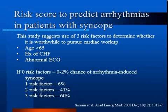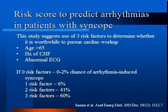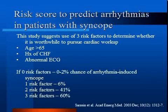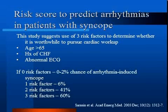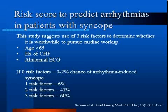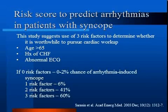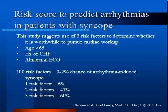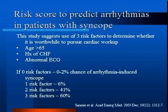Often a reason for syncope cannot be identified after an initial workup and patients are admitted for a cardiac workup. The Saracen et al. study has been validated and suggests using three risk factors to determine whether it is worthwhile to pursue cardiac workup: age greater than 65, history of CHF, and an abnormal ECG. If they have zero risk factors, there is a 0-2% chance of arrhythmia-induced syncope. One risk factor gives a 6% chance, two risk factors a 41% chance, and three risk factors suggest a 60% chance.